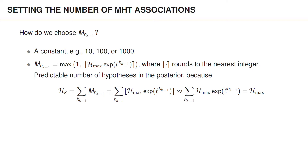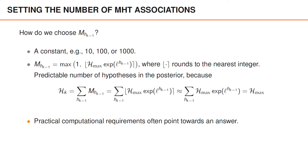Another way to motivate this choice is that we focus more on predicted hypotheses that have high probability and compute more associations for them. It is often the case that posterior hypotheses with high probability are descendants of predicted hypotheses with high probability. Practical computational requirements often lead us toward an answer for how many hypotheses we can deal with. If the system is running offline and time is not a major restriction, we can use many hypotheses. However, for real-time applications, the algorithm must handle all hypotheses within a certain amount of time, which might require limiting the maximum number of hypotheses.